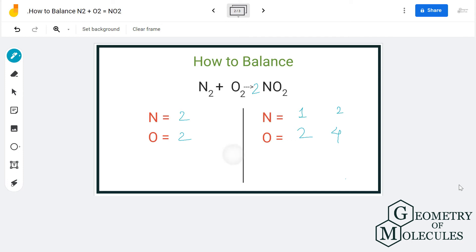So here we have N2 plus 2O2 which gives us 2NO2. This is the balanced equation for N2 plus O2.